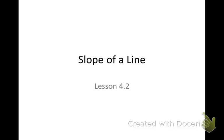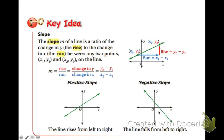Okay, today we're going to be learning how to calculate the slope of a line. So here's the key idea from your textbook. The slope is defined as the ratio of the change in y to the change in x between any two points on the line.